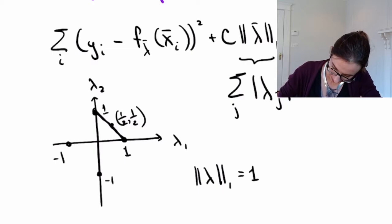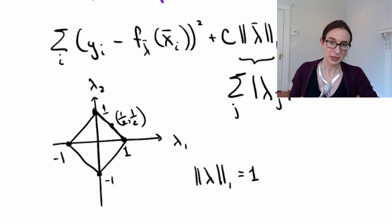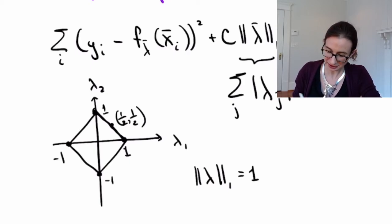And same with all of the other points on this line. Okay, same with this line, that line and this line. Okay, so the level sets of this L1 norm are a diamond. Okay, so let's draw a few more level sets. I'll erase what we have here and I'll draw a few more level sets.